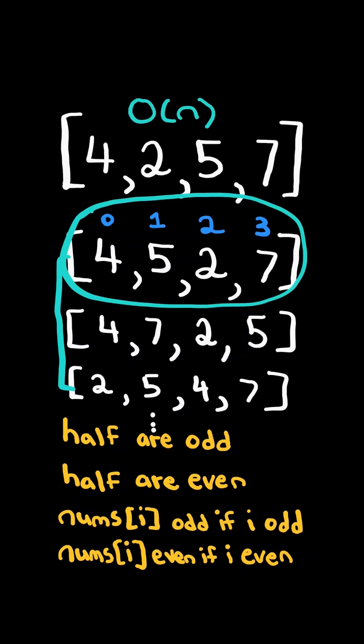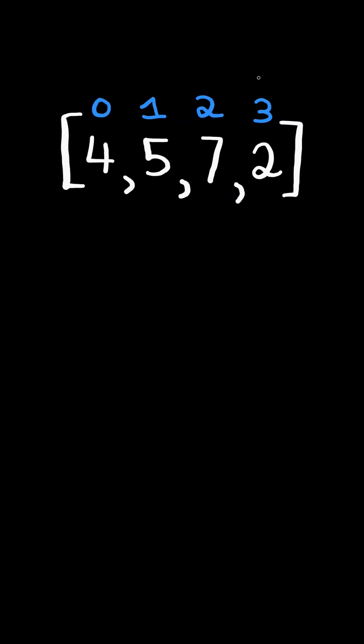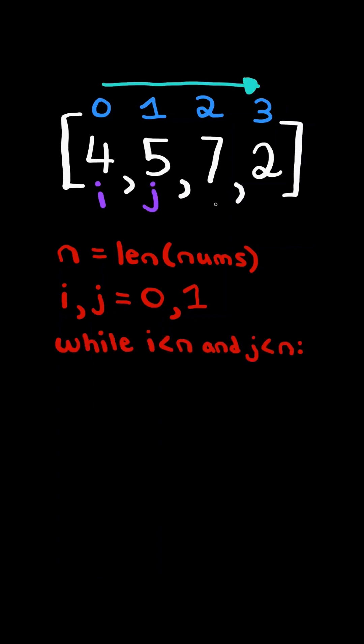We will solve this in O of n time. Consider this new example. We get the length of the list as n, and we have an even pointer i at index 0 and an odd pointer j at index 1, and we iterate through the list while i and j are less than n.